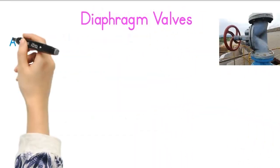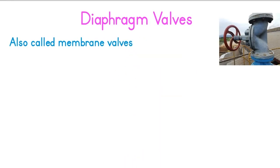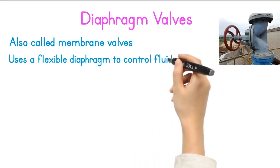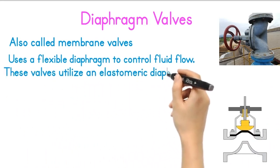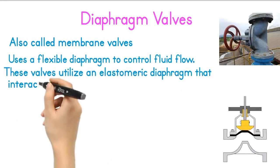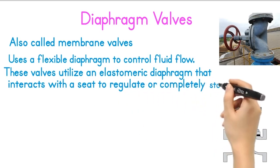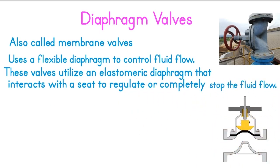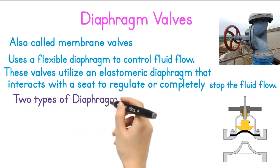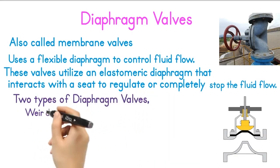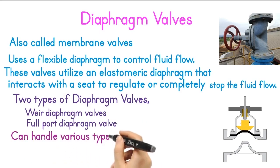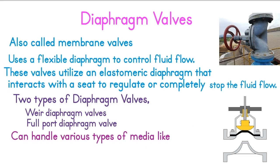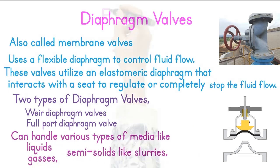Diaphragm valves, also called membrane valves, use a flexible diaphragm to control fluid flow. These valves utilize an elastomeric diaphragm that interacts with a seat to regulate or completely stop fluid flow. There are two types: weir diaphragm valves and full-port diaphragm valves. These valves can handle various types of media, including liquids, gases, and semi-solids like slurries.